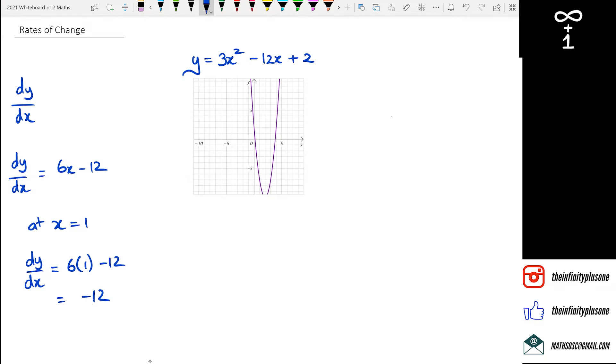Now what happens if I actually put the 1 in the original y function? So if I go y is equal to 3 times 1 squared minus 12 times 1 plus 2, this is going to give me 3 minus 12 plus 2, which equals minus 7.